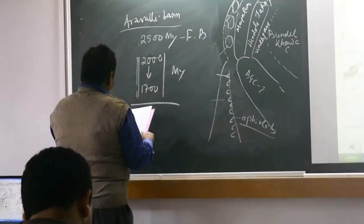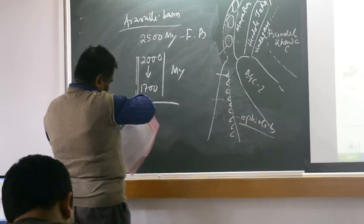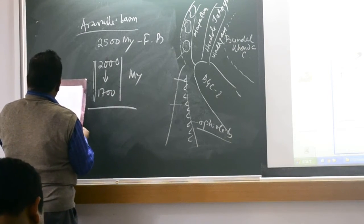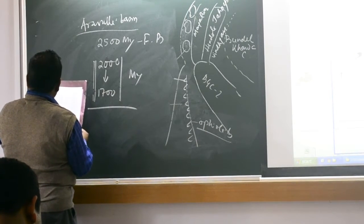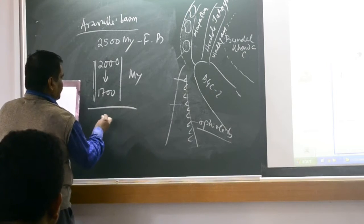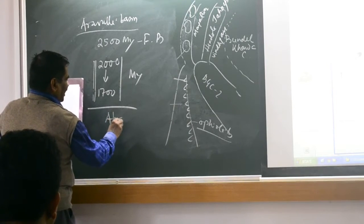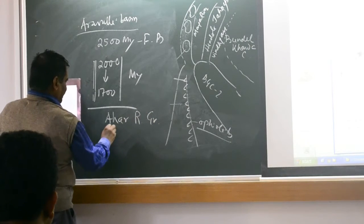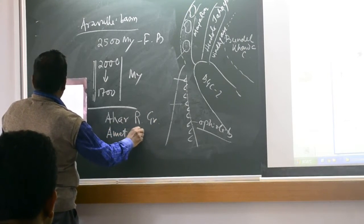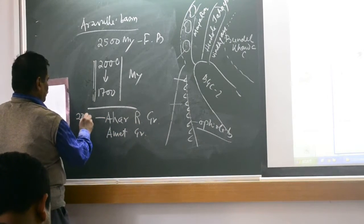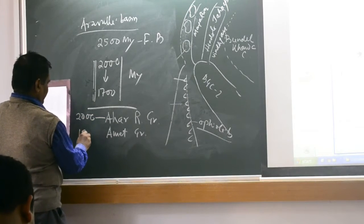So for this Aurogenic, I will give you two names. One is Ahar River granite — A-H-A-R, Ahar River granite. The other one is Amet granite. Ahar River granite is 2000 Ma. Amet granite is 1870 Ma.